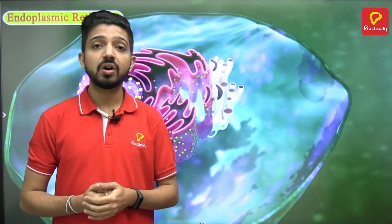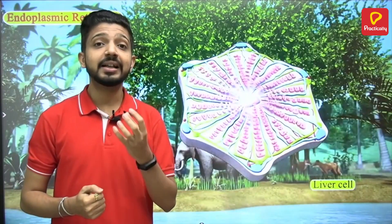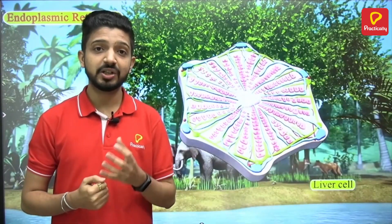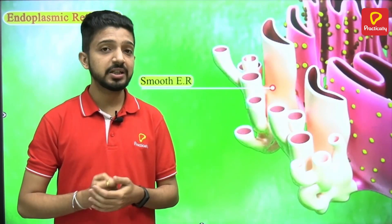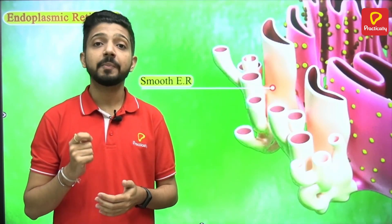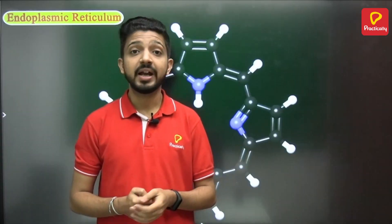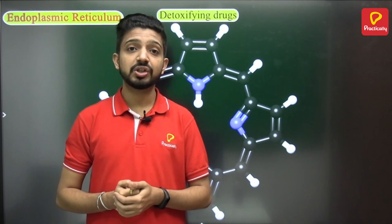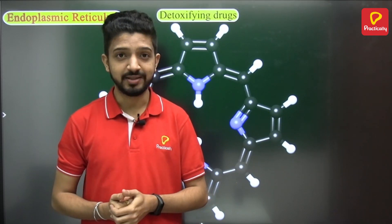In the case of some vertebrates, the liver cells contain smooth endoplasmic reticulum that plays a very important role in the detoxification of drugs, thus removing poison from the body.